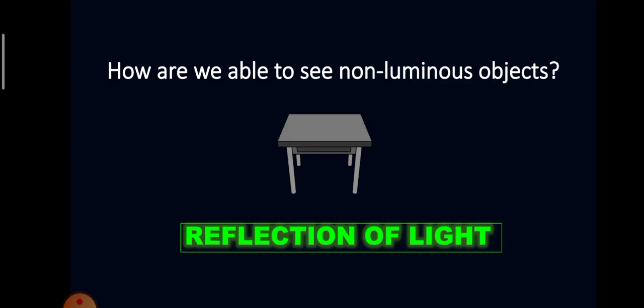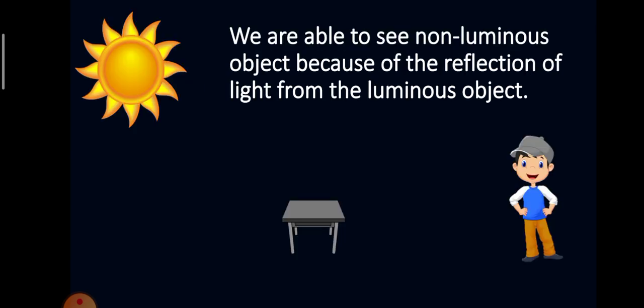But how are we able to see non-luminous objects, especially when it's dark? It is because of the reflection of light. You see, non-luminous objects reflect the light coming from the luminous objects like the sun. The reflected light from the non-luminous objects travels to our eyes and that's why we are able to see the object.